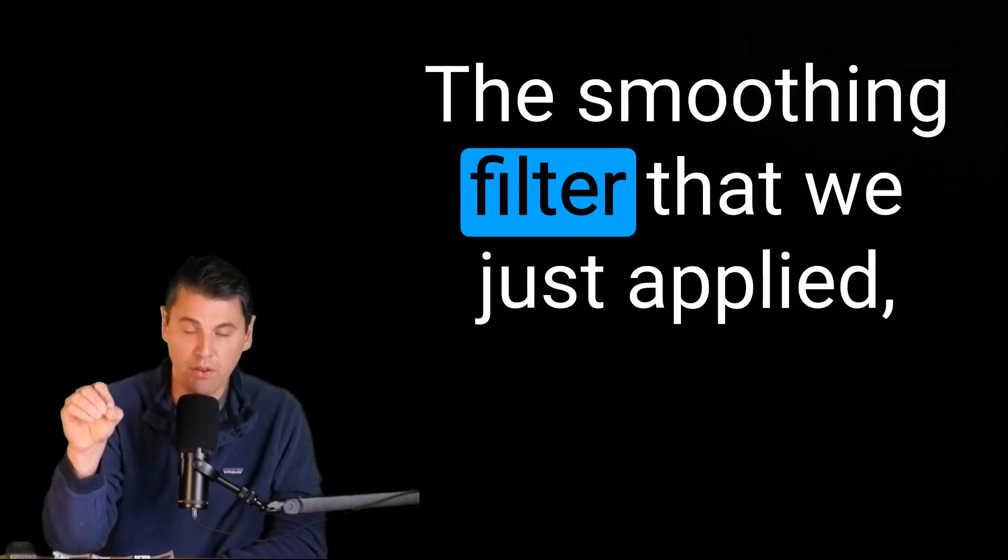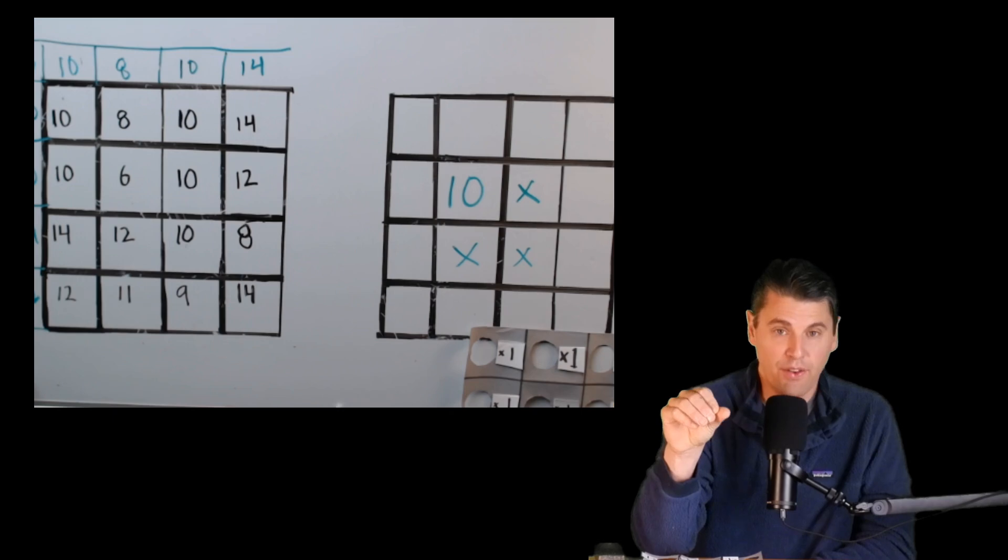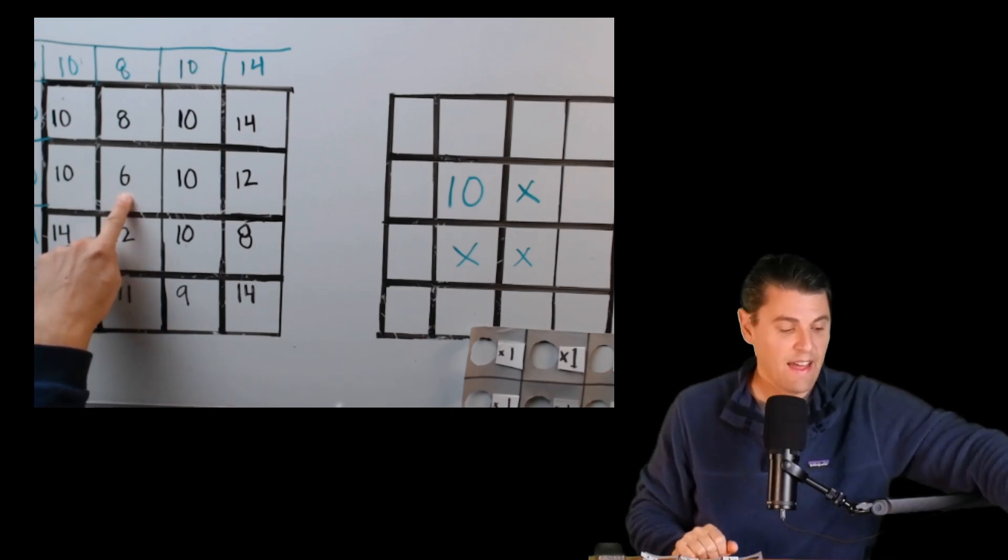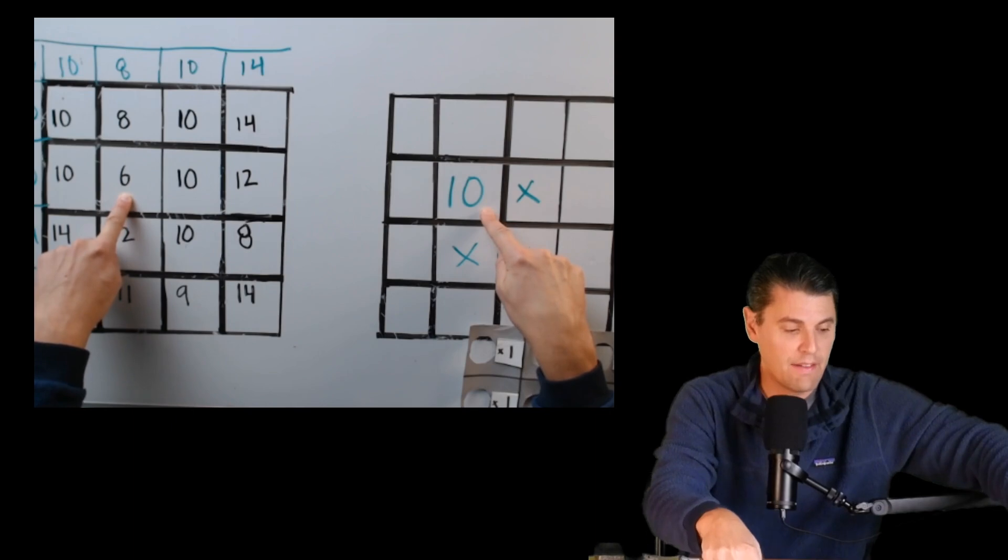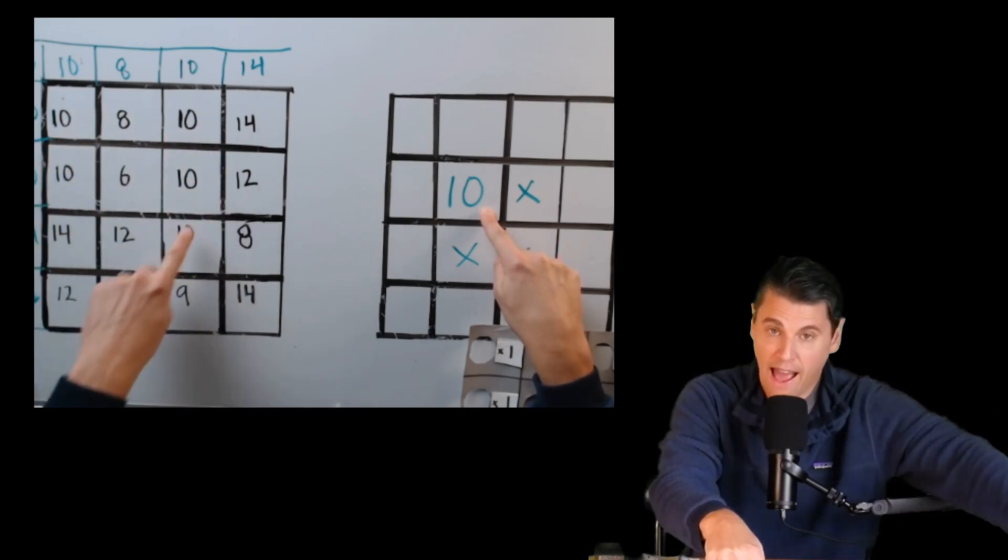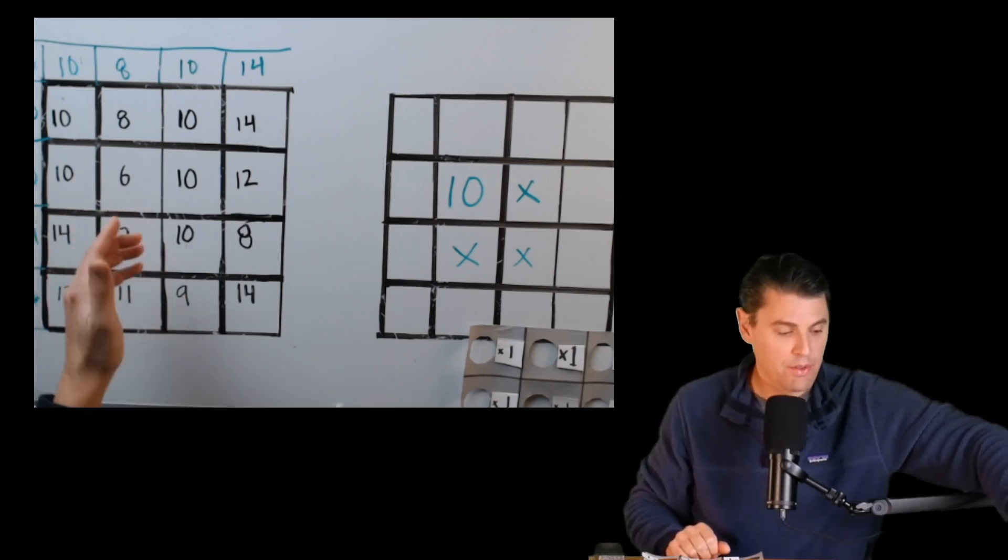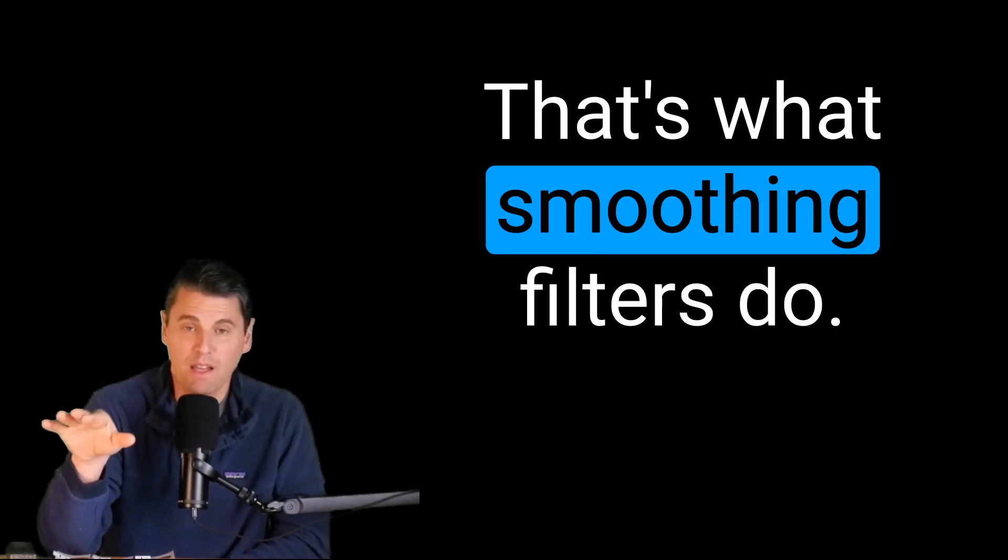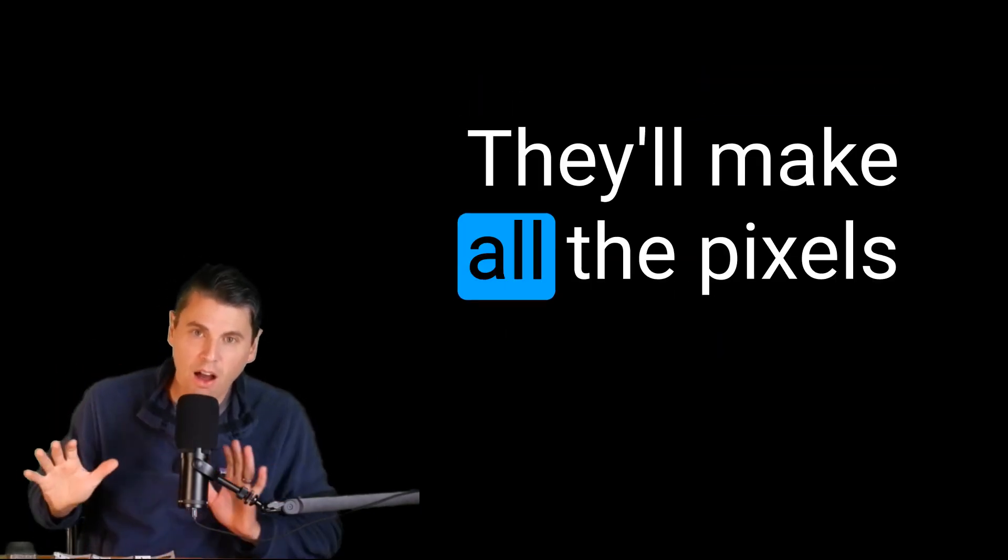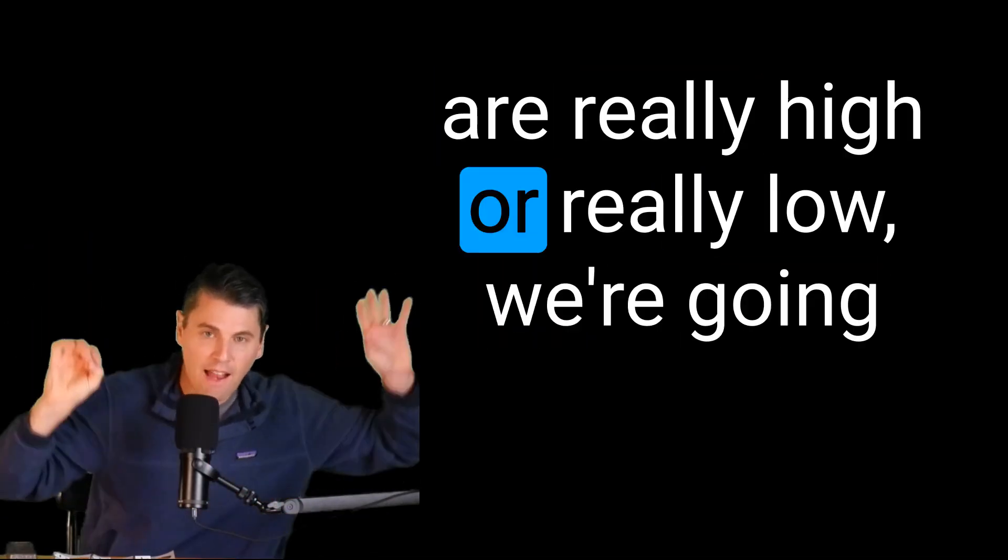The smoothing filter that we just applied, that smoothing filter, if you note, we went from a value of 6. That value of 6 was much lower than the neighbors. And we went from a value of 6 to a value of 10. That value of 10 is basically the average, by definition of that little filter that we just did, of all the neighbors. We brought it up, and we made it more like its neighbors. That's what smoothing filters do. They'll make all the pixels more like their neighbors.